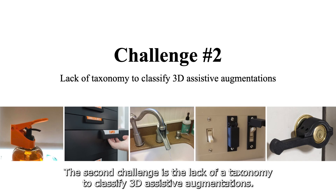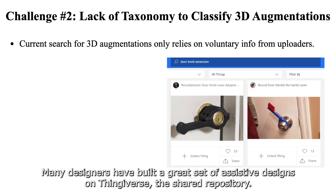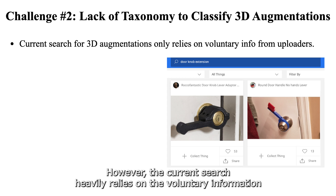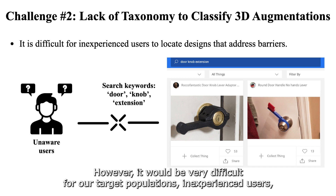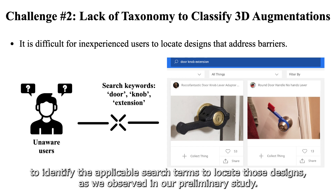The second challenge is the lack of taxonomy to classify 3D assistive augmentations. Many designers have built a great set of assistive designs on Thingiverse, the shared repository. However, the current search heavily relies on the voluntary information that the uploader provided, such as title, description, and tags. It would be very difficult for our target population of inexperienced users to identify the applicable search terms to locate those designs, as we observed in our preliminary study.